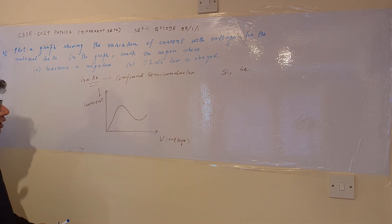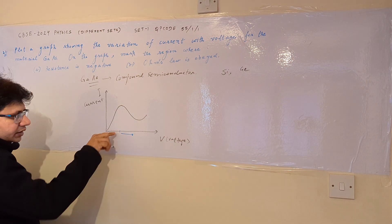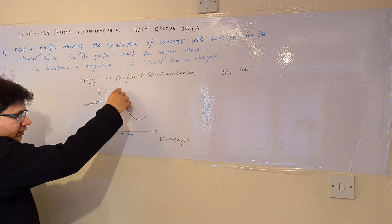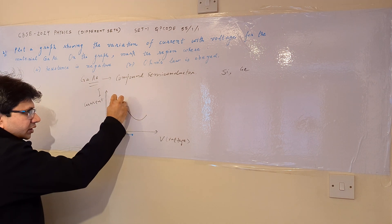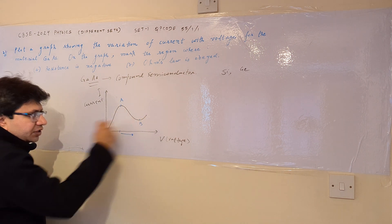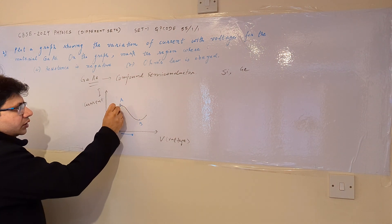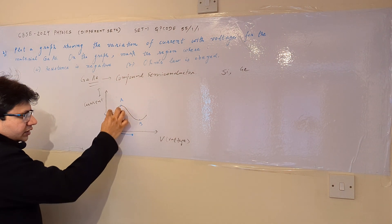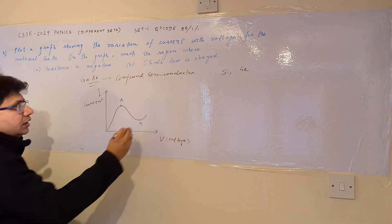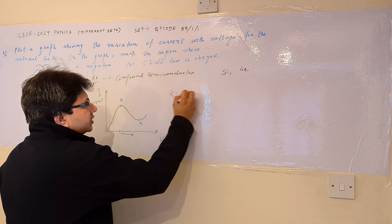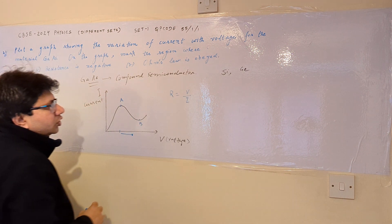We can clearly see that there is a particular region where when the voltage is increasing, the current is decreasing — the current goes down. Let us take this point as A and this point as B. So going from A to B, the current is decreasing whereas the voltage is increasing.